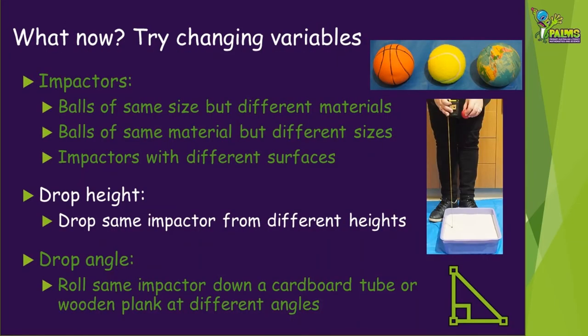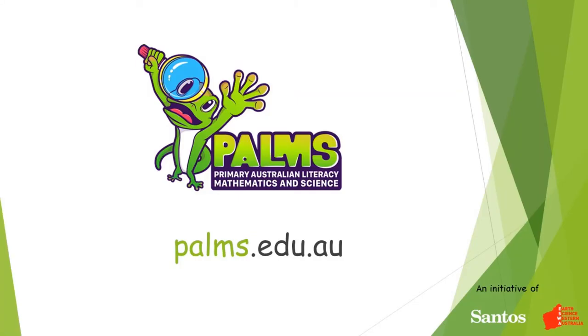Now that you've had a try at these experiments, here are some other variable changes to try. Change the impactors — use balls of the same size but different materials, or balls of the same material but different sizes. What effect do you think impactors with different surfaces such as fluffy, bumpy or ridged might have? Most meteorites are not smooth spheres. Try dropping the same impactor from different heights and measure the crater diameter. You could also try dropping at an angle by using a cardboard tube or a plank. For more fun, hands-on earth science activities, visit our website palms.edu.au.